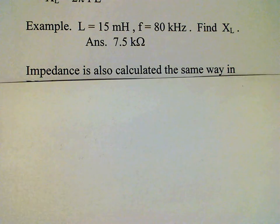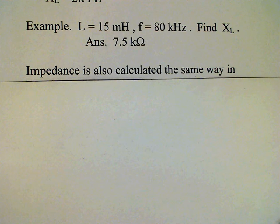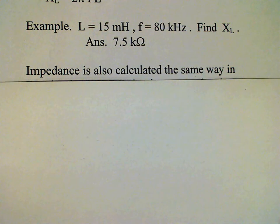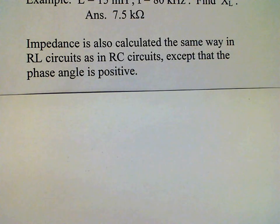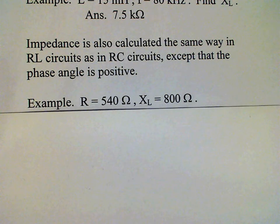Now impedance is also calculated in the same way as when we have the capacitive reactance. The magnitude of the impedance, square root sum of the squares again, and the phase angle inverse tangent of the ratio of the reactance to the resistance. And the only difference is that the phase angle is positive again.